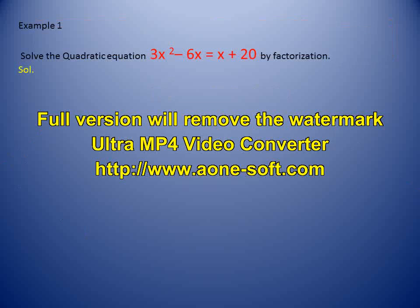In this example, the quadratic equation given is 3x² - 6x = x + 20. We will solve this by the factorization method. However, this equation is not in standard form, so first we convert it by taking all terms to one side. We will get: 3x² - 5x - 20 = 0.